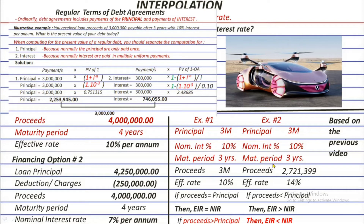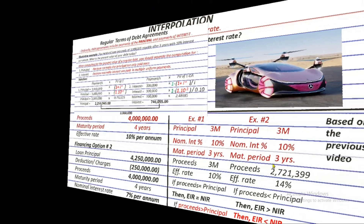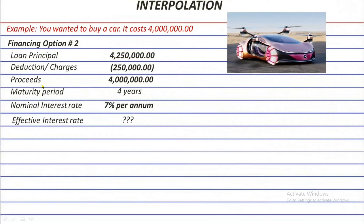You need to remember this in the interpolation process. Now let's start getting the effective rate for borrowing option number 2. Step 1 is what we call trial and error.